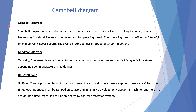The operating speed is defined as the speed from zero to MCS, that is, maximum continuous speed. Please note that MCS — maximum continuous speed — is more than the design speed of the wheel or impeller. The Campbell diagram is acceptable when there is no interference between the exciting frequency and the natural frequency.